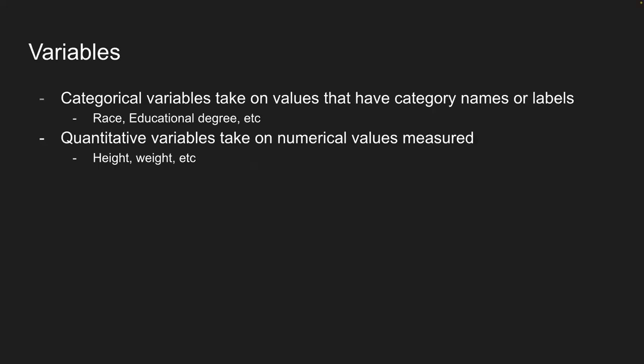Generally we can categorize variables into two types: categorical, meaning they take on values that have category names or labels like race or educational degree, or quantitative variables, which take on numerical values like height or weight.